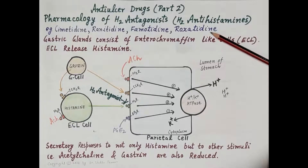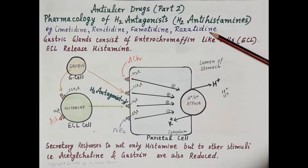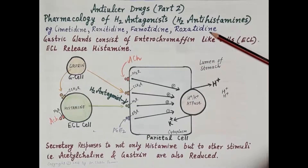H2 antagonists are the first class of drugs used for the treatment of peptic ulcer disease. In order to understand the pharmacology and therapeutic uses of H2 antagonists, let's first recapitulate what peptic ulcer disease is.